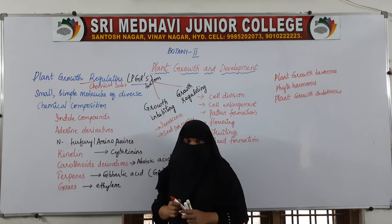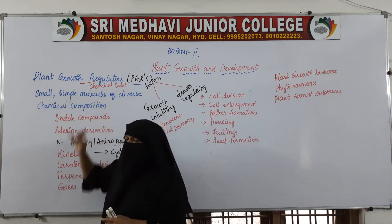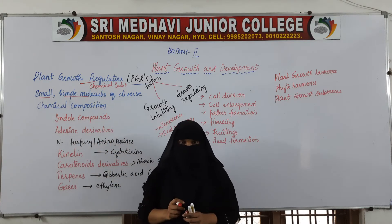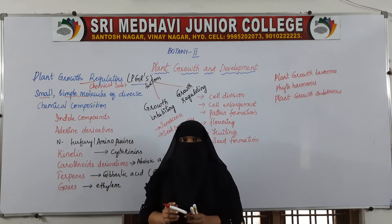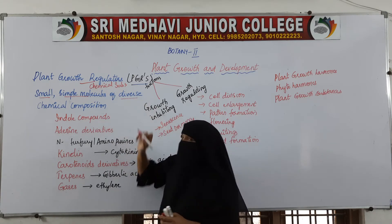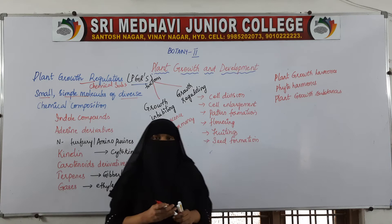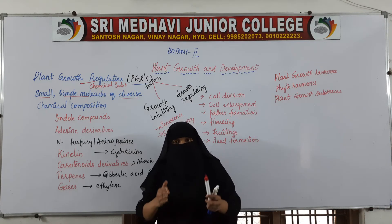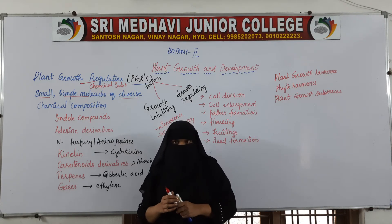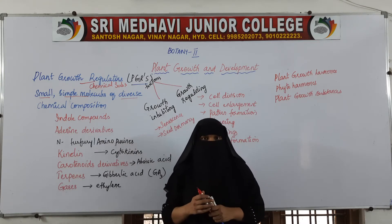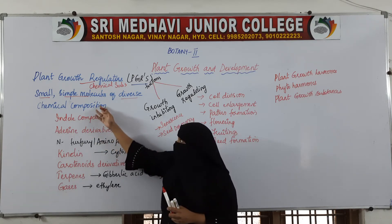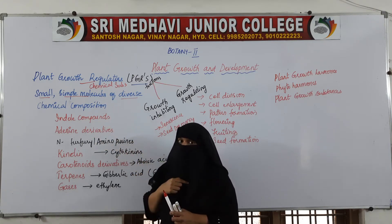Coming to the characteristics: plant growth regulators are very small and simple molecules of diverse chemical composition. Diverse means each molecule has a different chemical composition. These few simple molecules with different chemical compositions regulate the growth of plants.